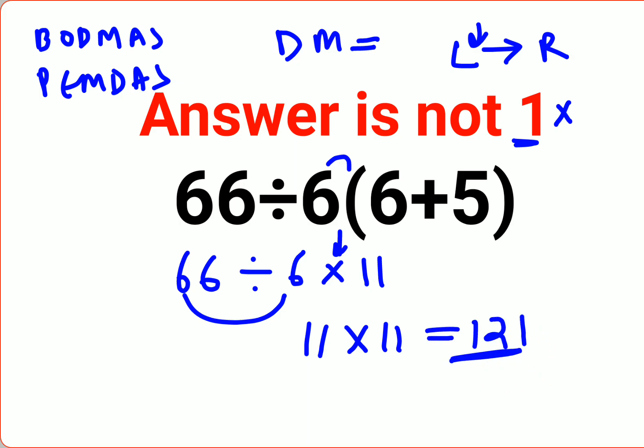I hope this is very clear to everyone. So now you might be wondering then what happens when will the answer be 1? The answer will be 1 if the question had changed through this. This 6 was also there in the bracket.